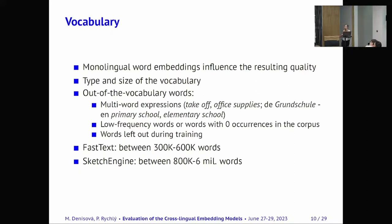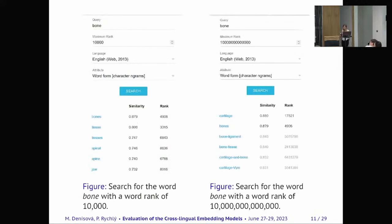And the monolingual embeddings that we used, FastText had between 300 to 600k words and Sketch Engine was much bigger. But it doesn't always mean that bigger is better because here we can see search for query bone and with Sketch Engine tool and when we extend the word rank from 10,000, when we have 10,000, then we can get more relevant searches than when we have like very big rank. So it doesn't always get better because we include also a lot of noise and it really depends on the quality of the monolingual word embeddings.